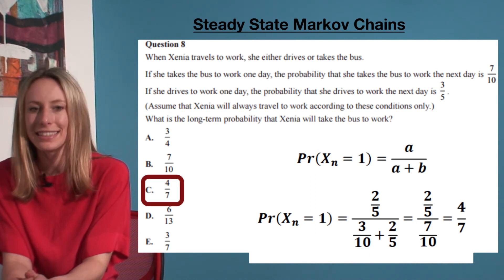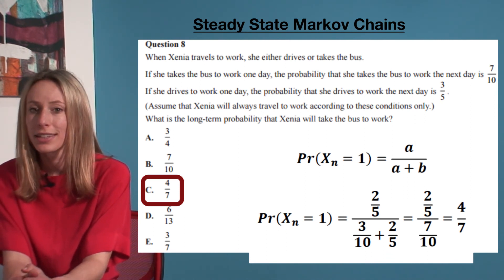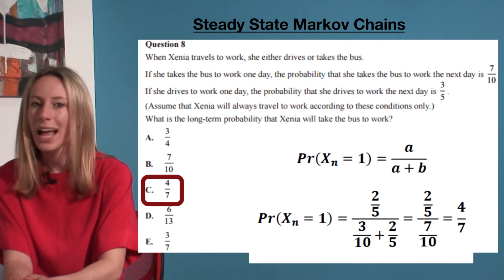So the multiple choice answer is C. It is critical to state which is your state one and state zero at the start of the question to limit any confusion. Then you just need to remember your formula, and the question isn't so hard. Happy studying!